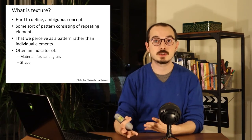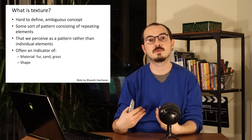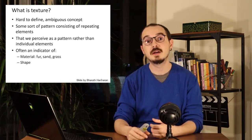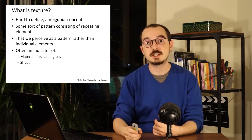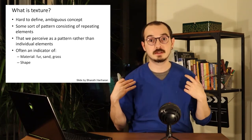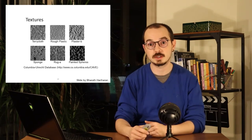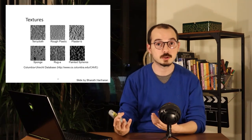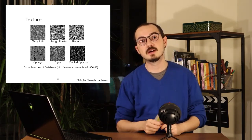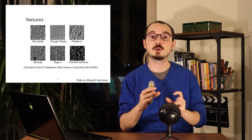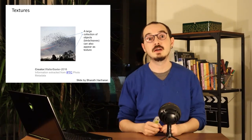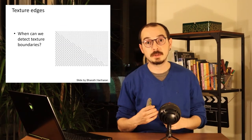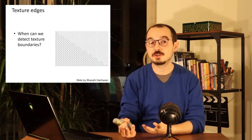Texture is a hard-to-define concept based on our perception. For example, wood has a lot of edges that may look like object edges, but we know these are part of the same object on the table. Textures can be rough plastic, sponge, a bunch of apples — a chaotic and repetitive behavior we perceive as a single object even though there are many edges inside. We can also model a flock of birds or trees as textures. As humans, we can pick up on texture boundaries without using the image gradient.